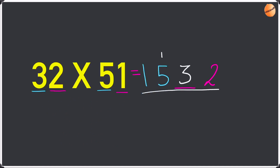Now add this up: 2 plus nothing is 2, 3 plus nothing is 3, 5 plus 1 is 6, and 1 plus nothing is 1. So the answer is 1632.